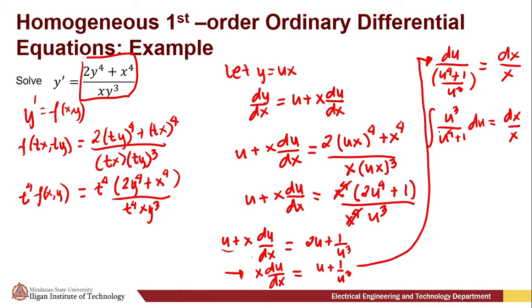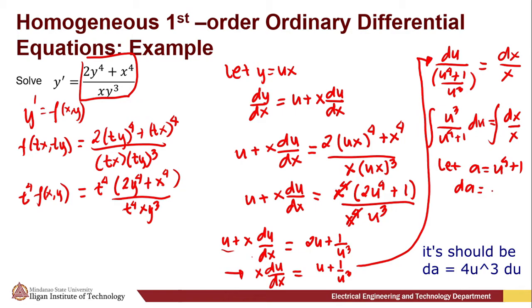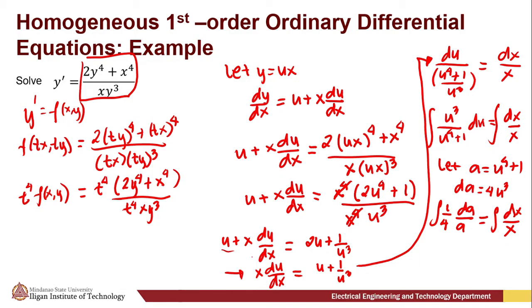We can now integrate both sides of the equation. We let a = u⁴ + 1, so da = 4u³ du. Applying this substitution, the left side becomes (1/4) · da/a, which equals dx/x on the right. Now we can integrate both sides.